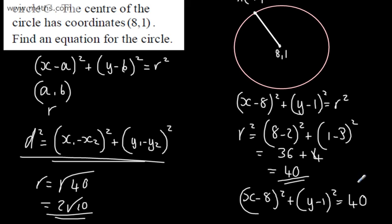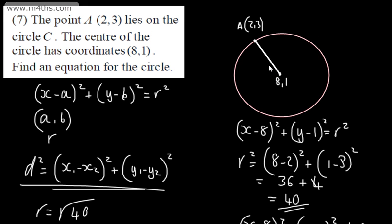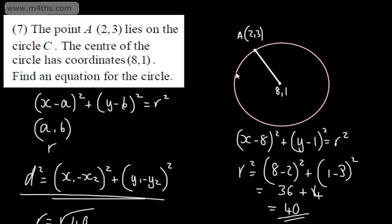So we can now write that the equation of the circle is x minus 8, all squared, plus y minus 1, all squared, is equal to 40. As stated, you don't have to draw this circle, but certainly with the harder examples it will help you.